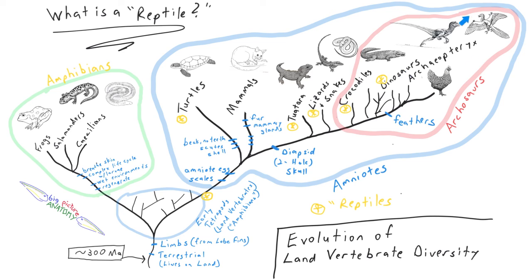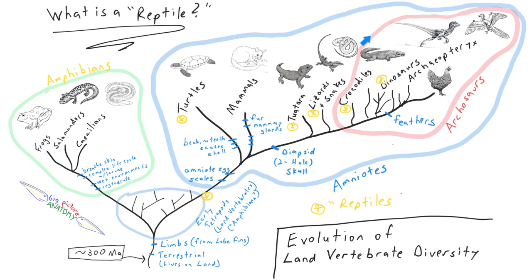To review: we have the evolution of land vertebrates about 300 million years ago into a diversity of early tetrapod groups, unfortunately sometimes called fossil amphibians — probably not a great name for them. From there, one branch leads to the modern amphibians — frogs, salamanders, and caecilians — and another branch leads to all of the amniotes, which would include three main groups: turtles, mammals, and this reptile-bird clan, which includes the crocodile-and-bird group we call archosaurs.